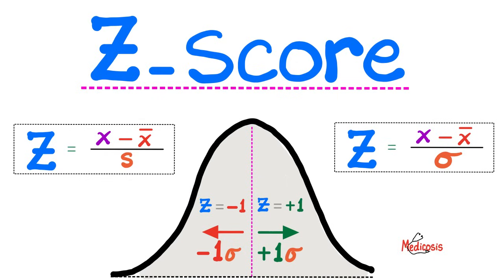In previous videos, we had an introduction to statistics. We talked about populations, samples, parameters, data, variables, independent versus dependent variables, explanatory and response variables, quantitative and qualitative variables, numerical versus categorical variables, continuous, discrete, ordinal, and nominal variables. We talked about frequency tables and methods of data visualization such as the pie chart, bar chart, histogram, pictogram, heat maps, tree maps, stem and leaf plot, and the famous box and whisker plot. We also talked about measures of central tendency — the mean, the median, and the mode — as well as measures of spread such as variance, standard deviation, range, interquartile range, and more.